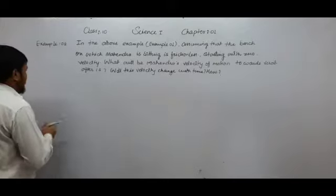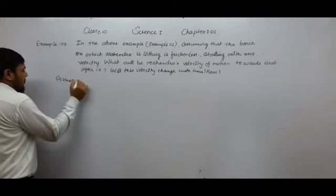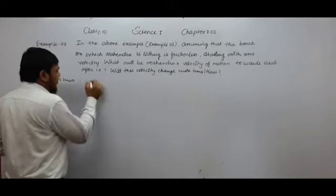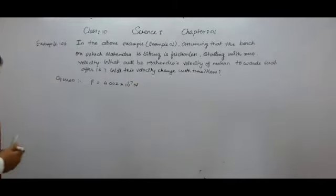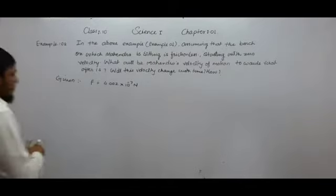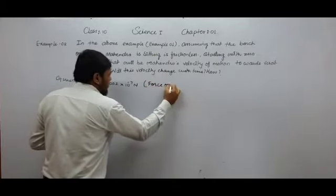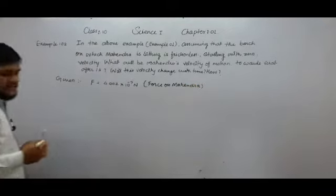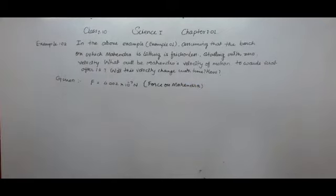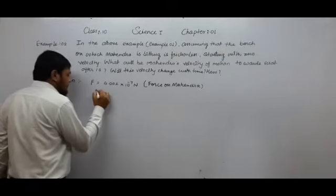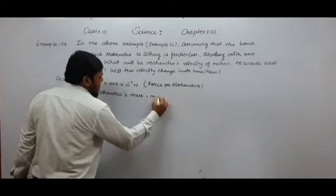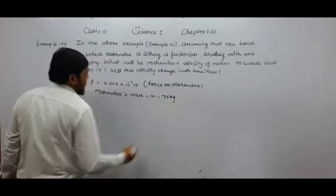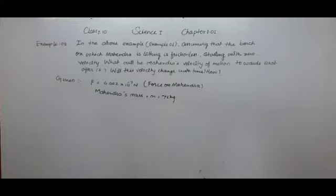We have to calculate the velocity. For that, we will consider what is given to us. According to example number 1, the force between Mahindra and Virat, F, is equal to 4.002 multiplied by 10 raised to power minus 7 Newton. Mahindra's mass M is equal to 75 kilogram, as given in example number 1.